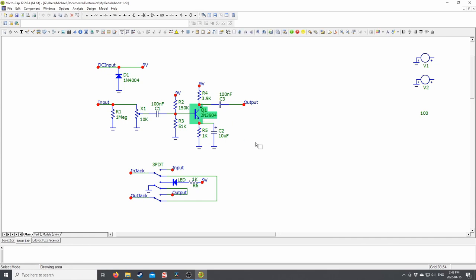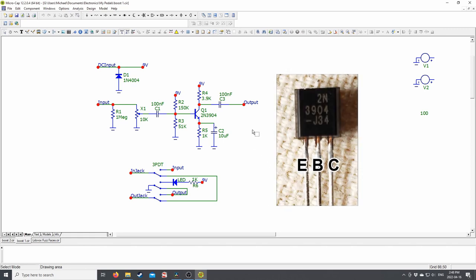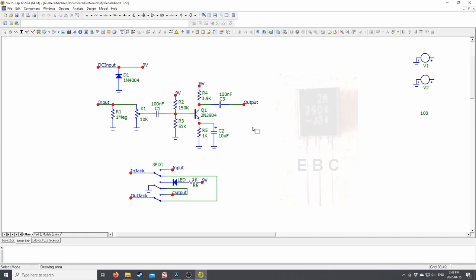Next is our transistor which is pretty self-explanatory. The center pin is called the base. The top pin is called the collector. And the bottom pin is called the emitter. When you look at a transistor face on, the base will be in the middle, the emitter will be on the left, and the collector will be on the right.